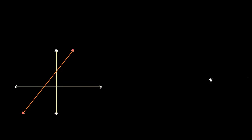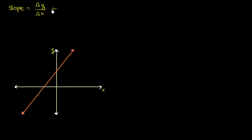We tend to be told in algebra class that if we have a line, our line will have a constant rate of change of y with respect to x. Another way of thinking about it, a line will have a constant inclination, or a constant slope. Our slope is literally defined as your change in y — this triangle is the Greek letter delta, a shorthand for change in — delta y means change in y over change in x. And for a line, this is constant.